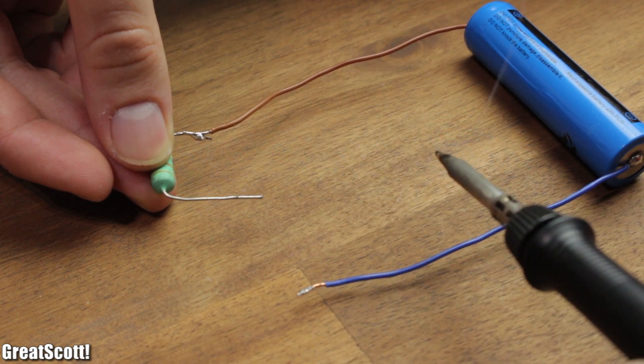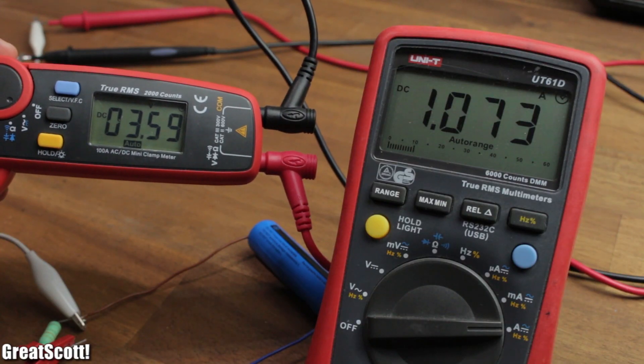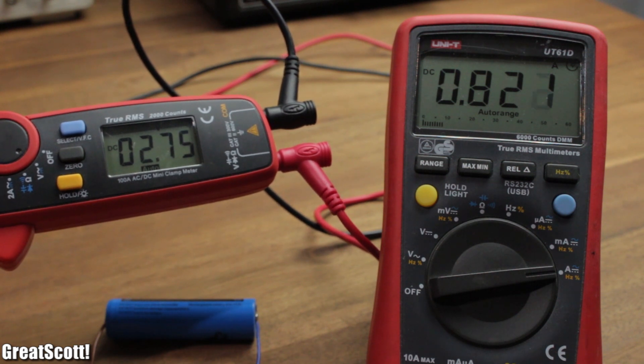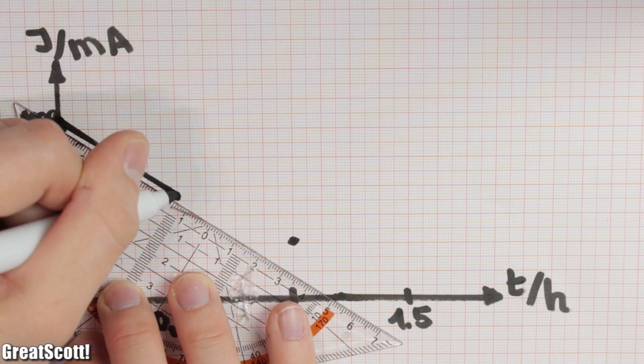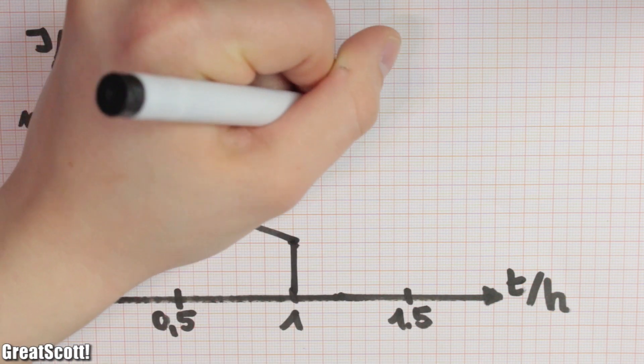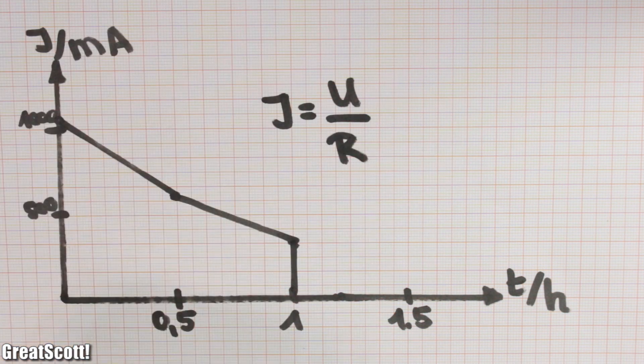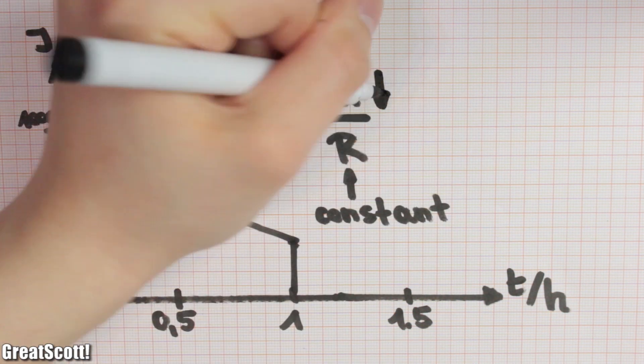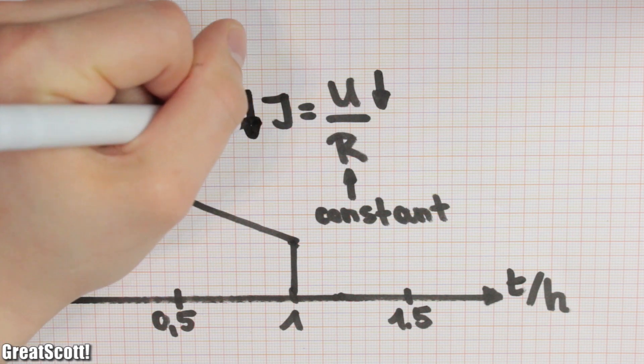As you can see, the current decreases over time because the voltage of our battery drops slowly from 4.2 volts to 2.5 volts. And since we are all familiar with Ohm's law, we can see why: the resistance is constant, the voltage decreases, and so does our current.